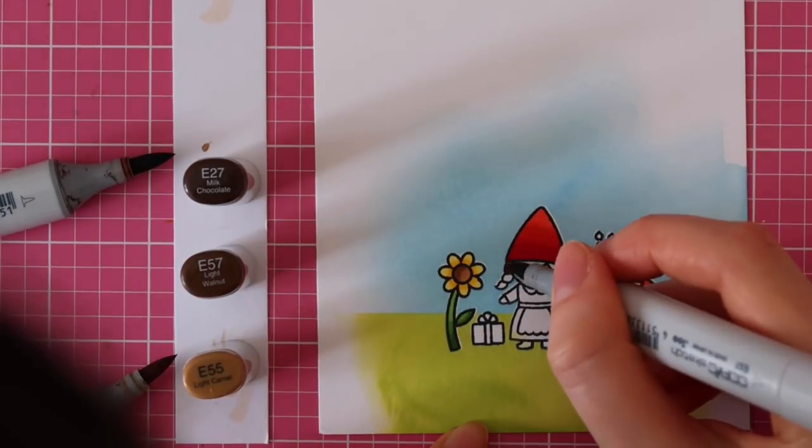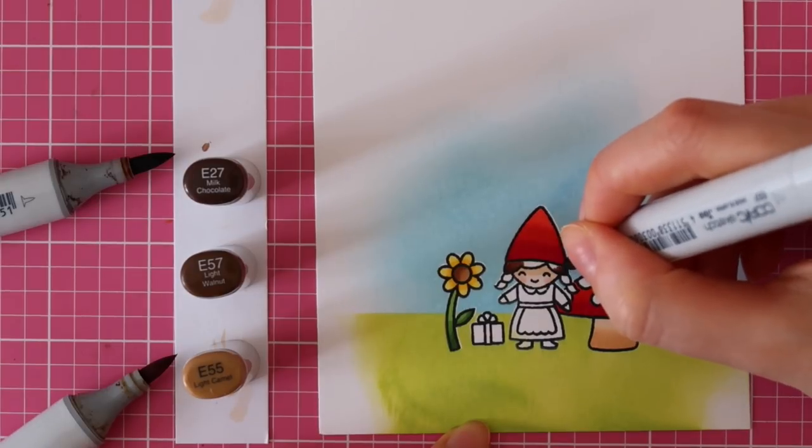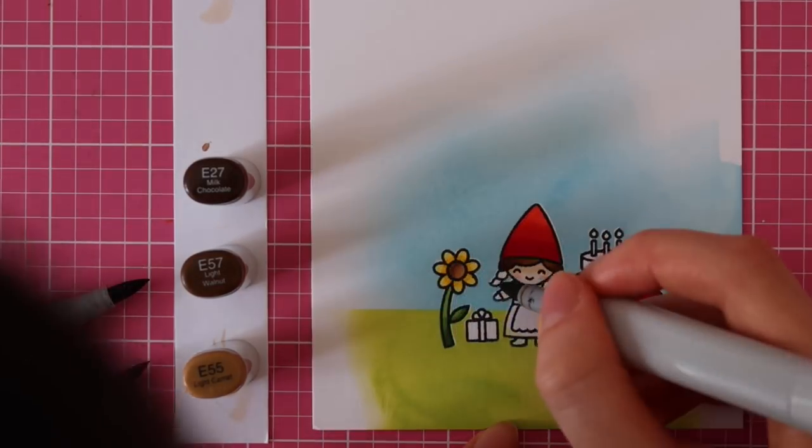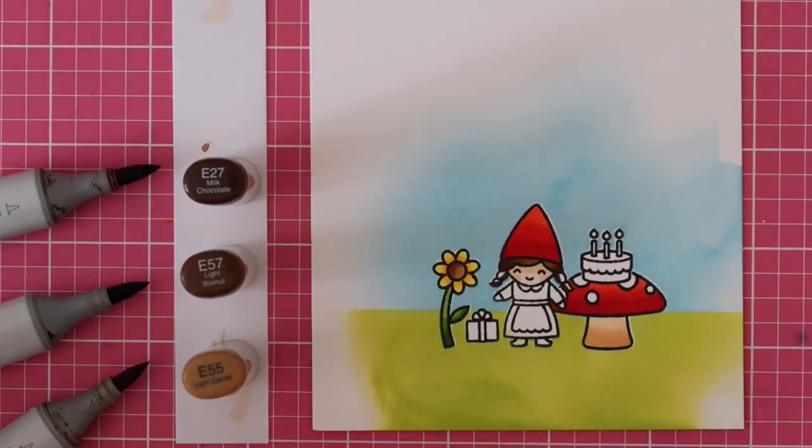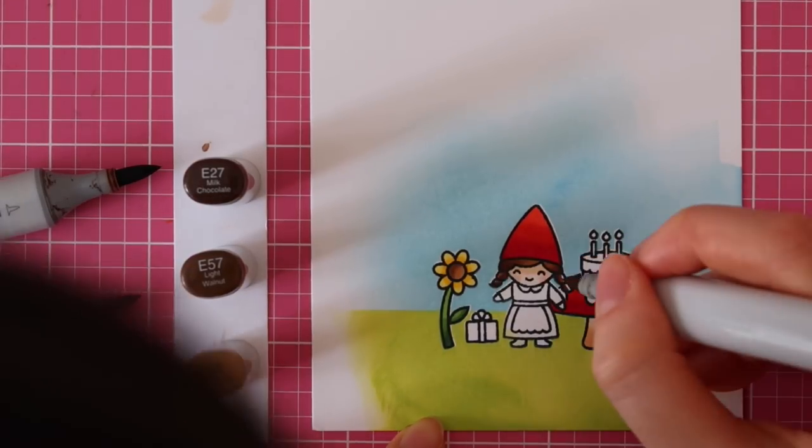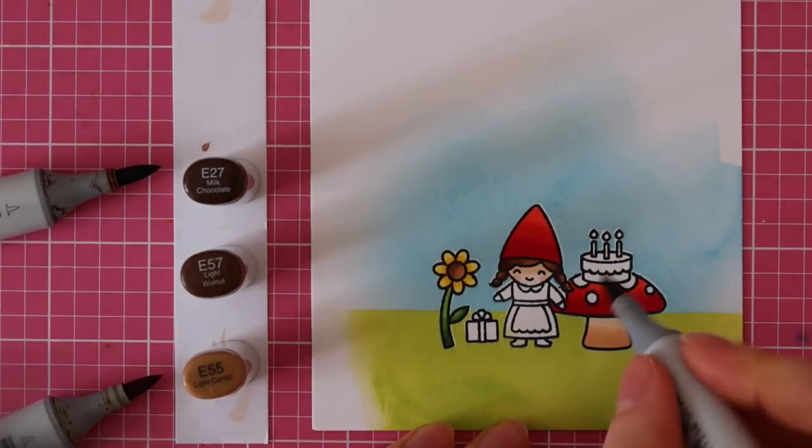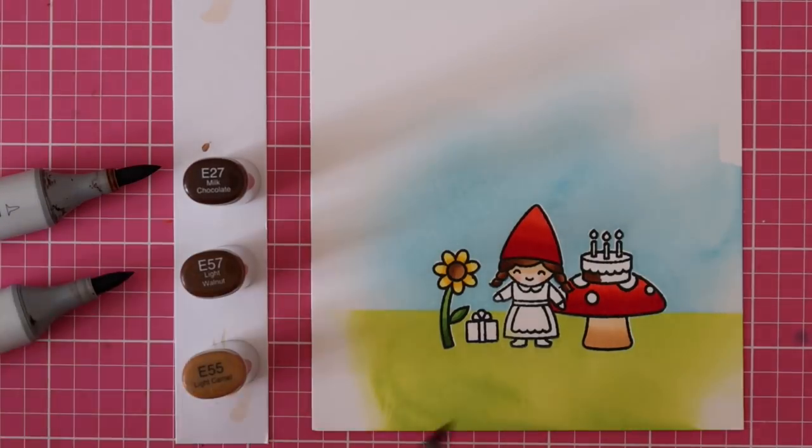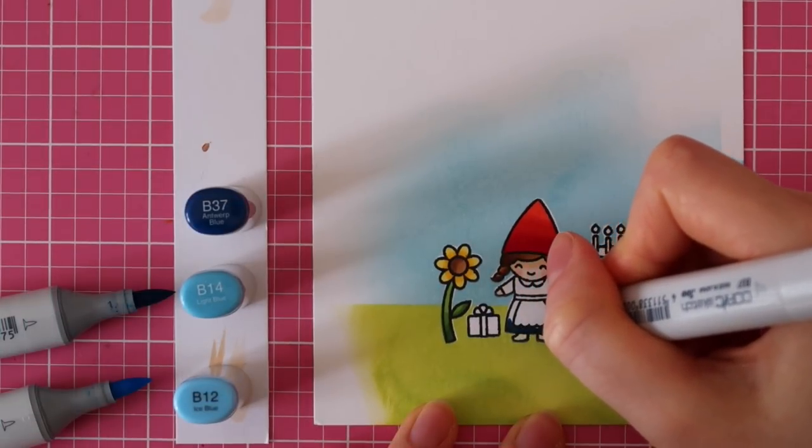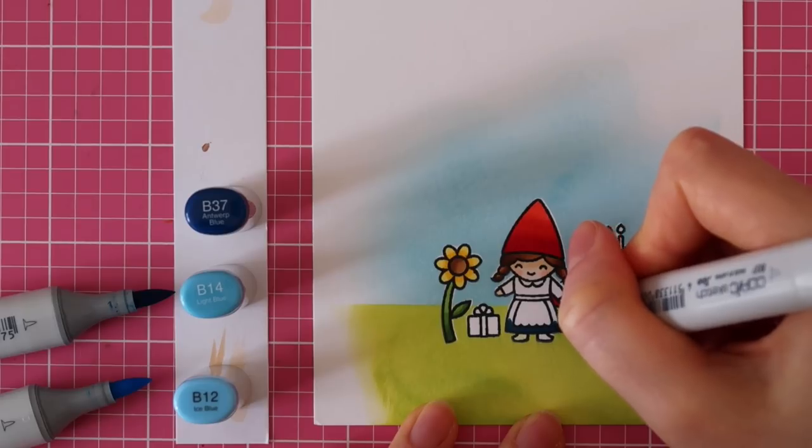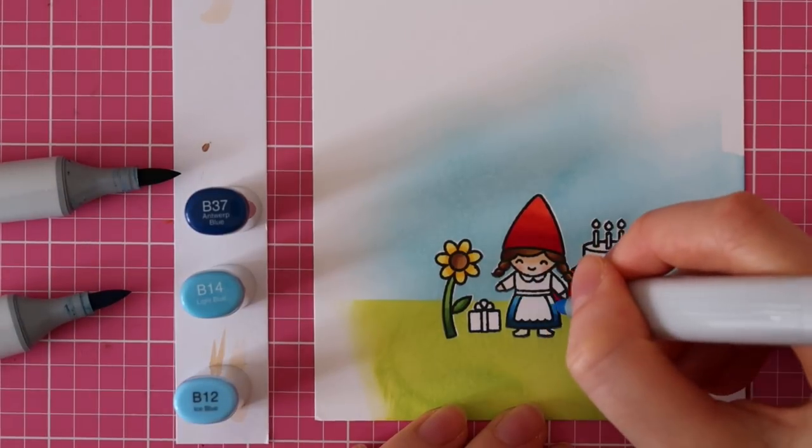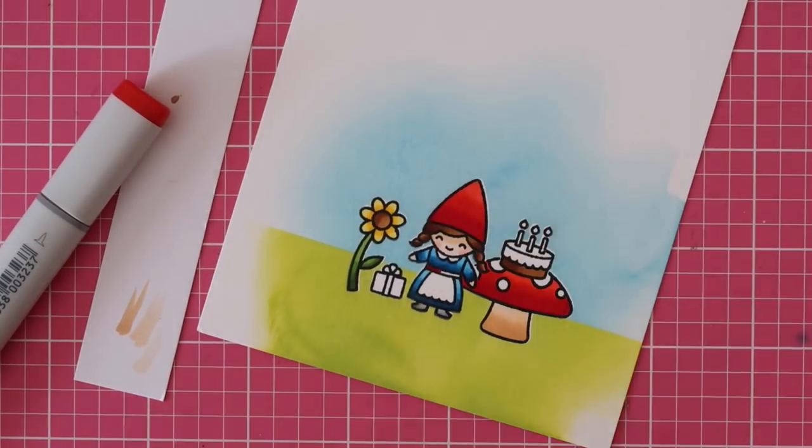For this little gnome's hair, I'm using E27, E57 and E55. I'm keeping this coloring very simple, very basic since these are such small images. However, I do like to use two or three shades to add some shading and highlights. So for this mushroom, I used the same shades of red and then I colored the flower using the exact same Copic markers. I also used the same markers to color her skin and her little cap. So for her dress, I'm also using B37, B14 and B12. And these three shades of blue really work together beautifully. They blend effortlessly.